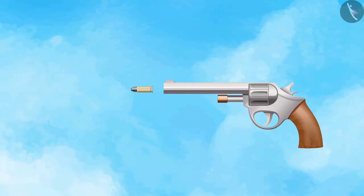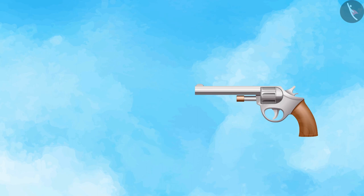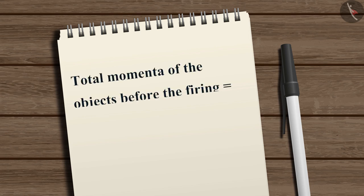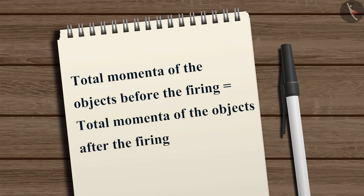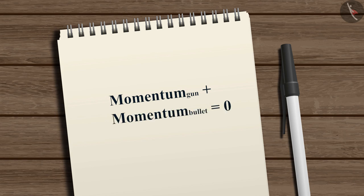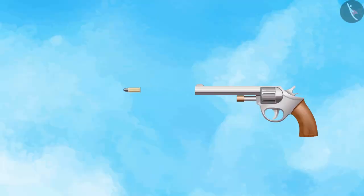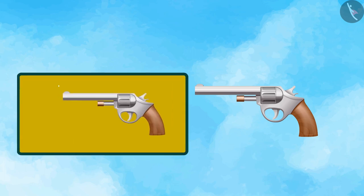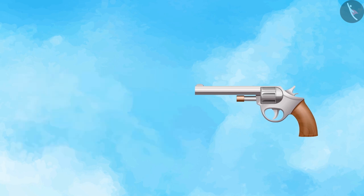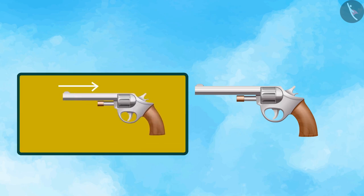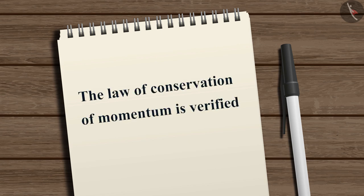Let us now consider an example to understand the law better — the situation of firing a gun. Before firing, both the gun and the bullet have zero velocity. After the bullet is fired, it moves in the forward direction with a certain velocity. According to the law of conservation of momentum, the total momenta before and after firing must be equal, so the sum of momenta of the gun and bullet after firing should equal zero. Therefore, if the bullet acquires a forward velocity, the gun must acquire a backward velocity — observed as the recoil of the gun. The law of conservation of momentum is verified in this case.